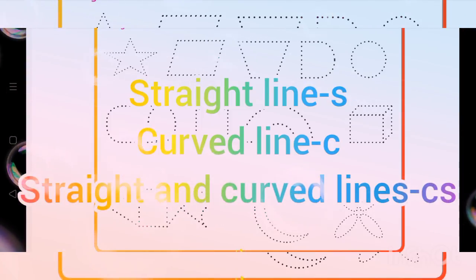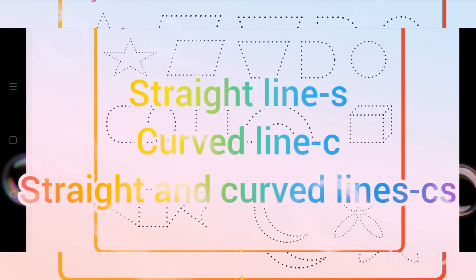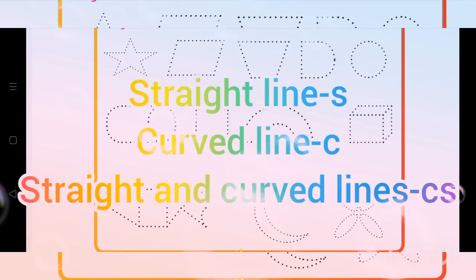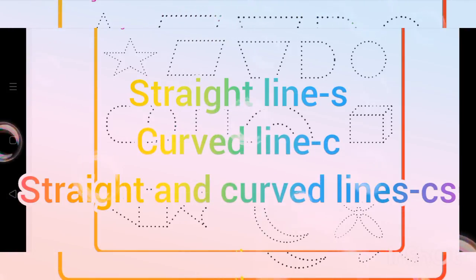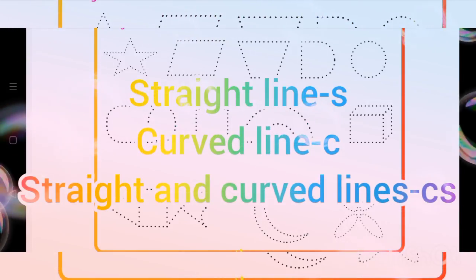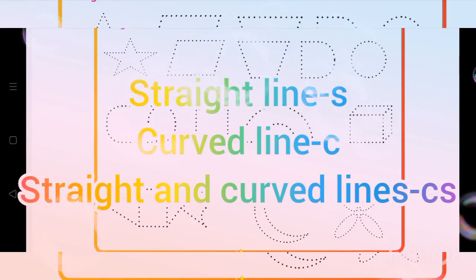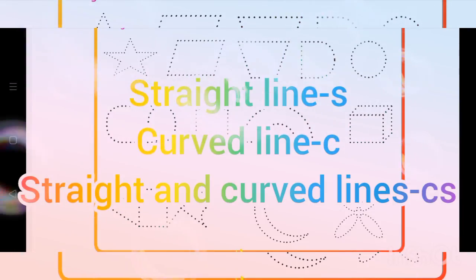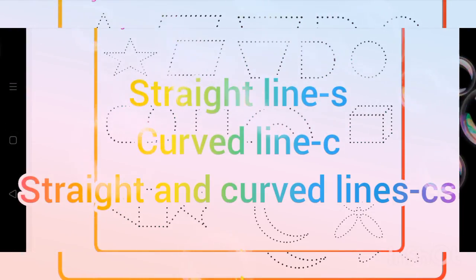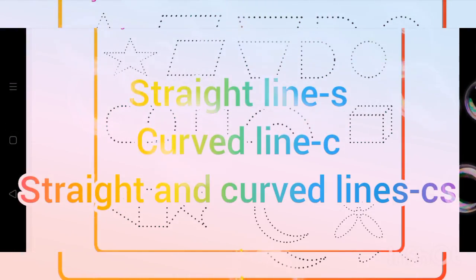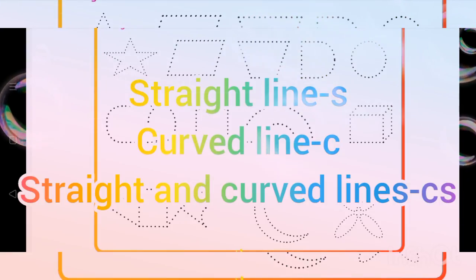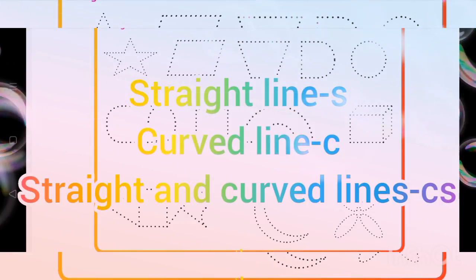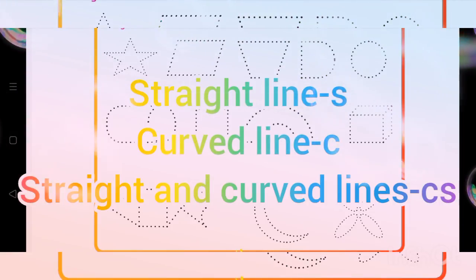If the picture has a straight line, we should put S. If the picture has a curved line, we should put C. If the picture has both straight lines and curved lines, we should write C.